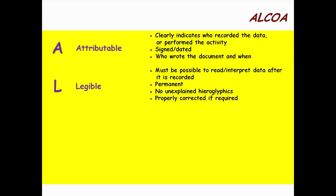Legible. It must be possible to read or interpret the data after it's recorded. It must be permanent — that means no pencils. No unexplained hieroglyphics, symbols, or codes. If it's corrected it has to be done properly: one line through, signature, date, new number. Or if in Japan, two lines through — because one line through in Japan means negation, and two lines through means it's an error.